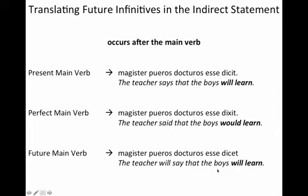Finally, future infinitives occur after the main verb — they have a future sense compared to whenever the main verb is happening. So 'magister pueros docturos esse dicit': 'The teacher says that the boys will learn.' With a perfect verb 'dixit': 'The teacher said that the boys would learn.' And with a future main verb, it mirrors the present: 'The teacher will say that the boys will learn.'